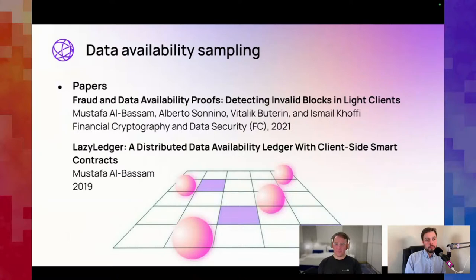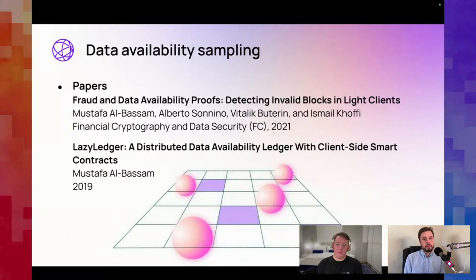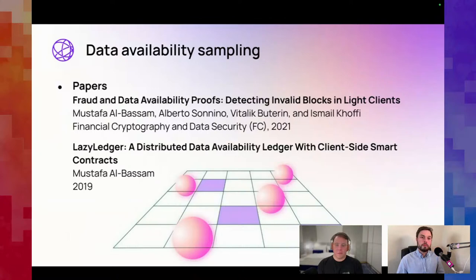For more on data availability sampling, there's a paper by Mustafa — our founder — and Vitalik, Ismail, and Alberto on fraud and data availability proofs, detecting invalid blocks in light clients. There's also the original Celestia paper called 'LazyLedger: A Distributed Data Availability Ledger with Client-Side Smart Contracts' by Mustafa. I can send links after this.